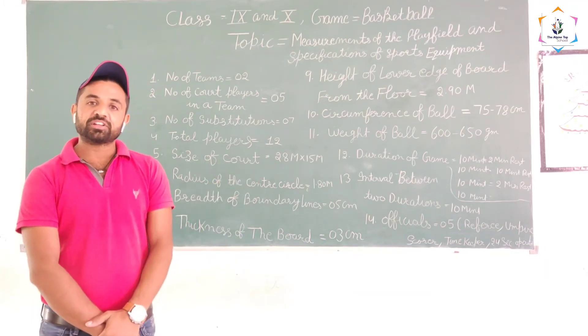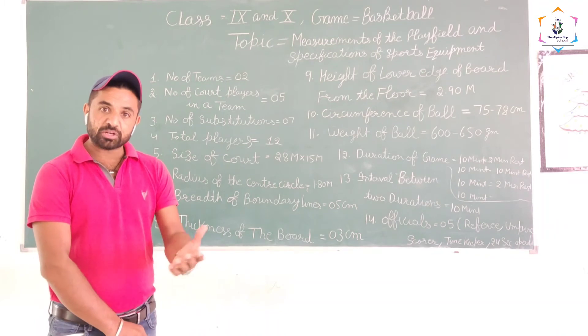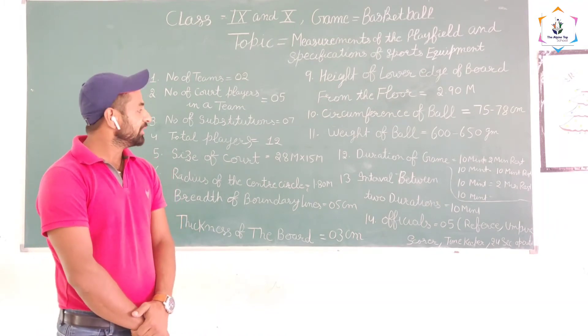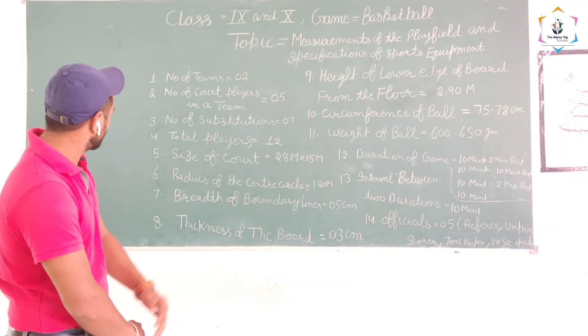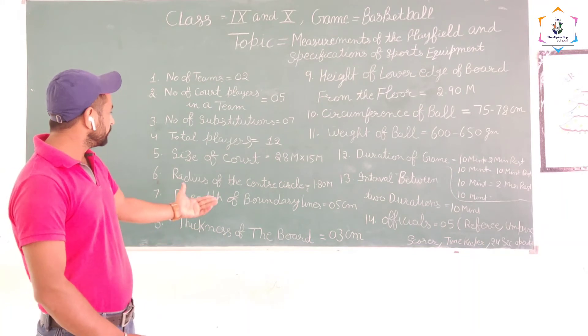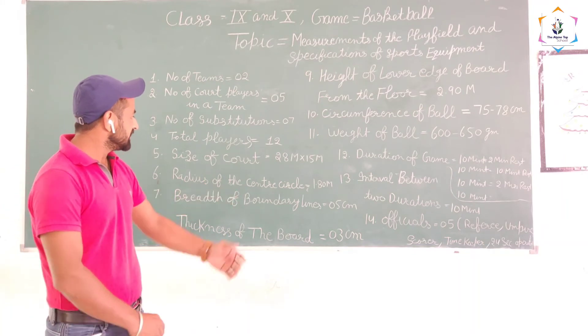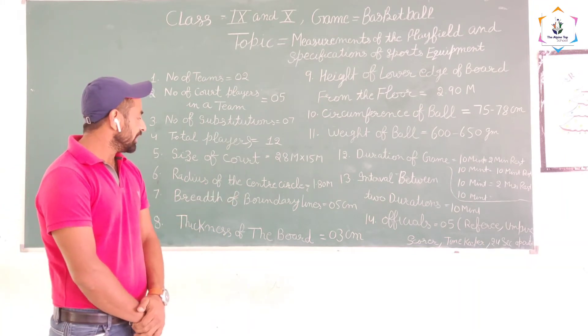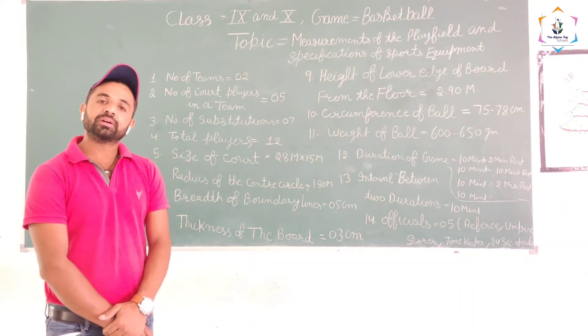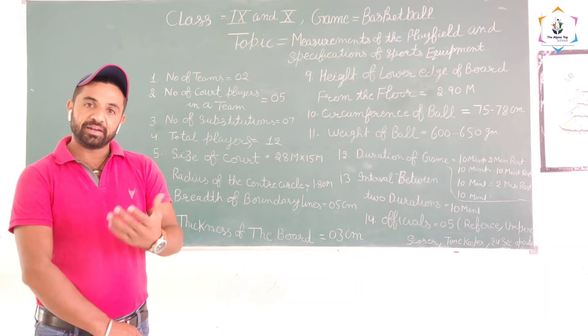28 meters is the length of the court and 15 meters is the width of the court. Next point: radius of the central circle. What is the central circle radius?